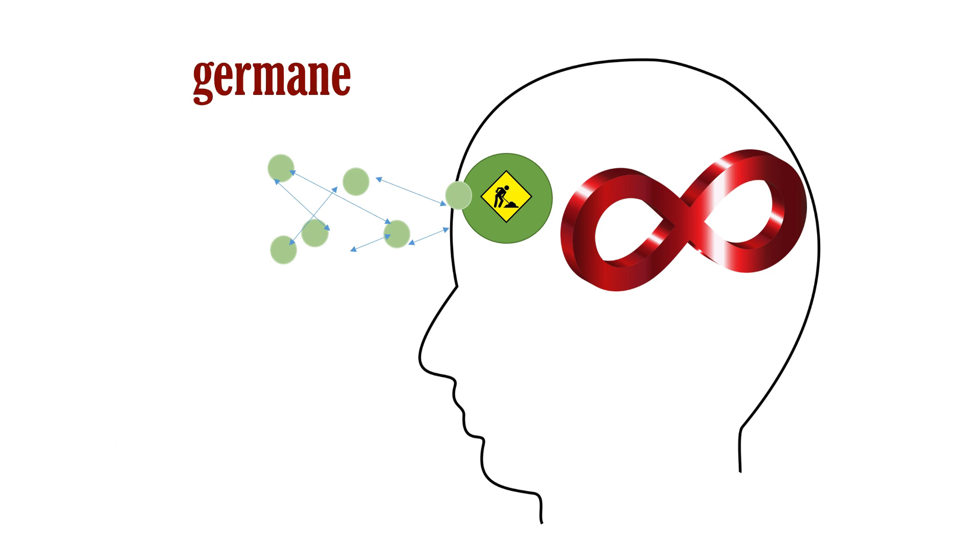The third type is germane load or generative load. This is the mental capacity that is directed towards integrating the new information with existing knowledge. This is what we aim to encourage.